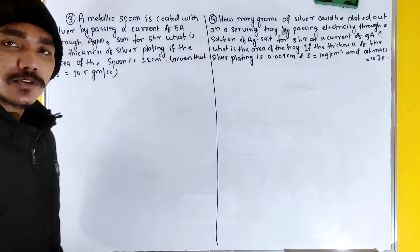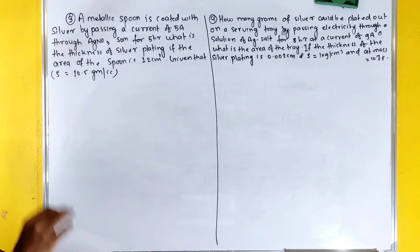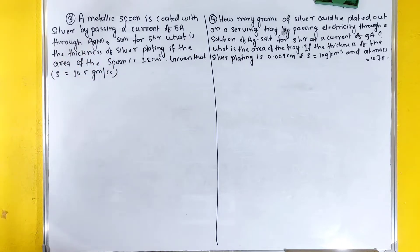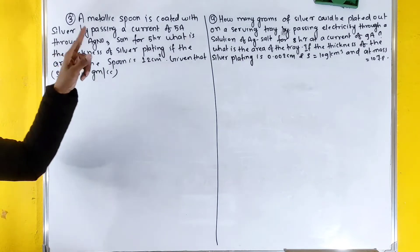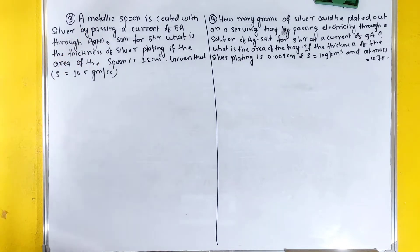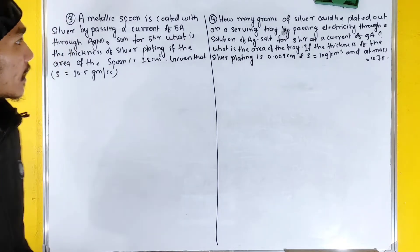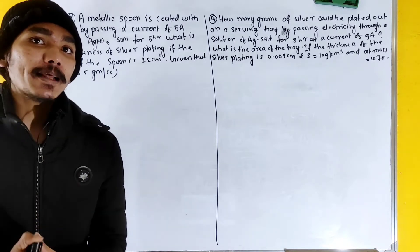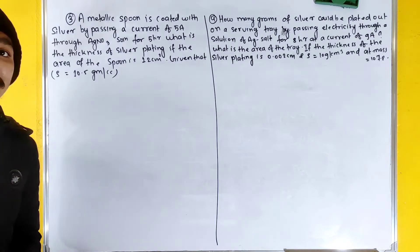Numerical 4: A metallic spoon is coated with silver by passing a current of 5 ampere through AgNO₃ solution for 5 hours. What is the thickness of the silver plating if the area of the spoon is 12 cm². Given that density is 10.5 gram per cc.